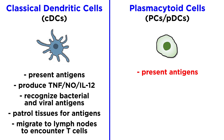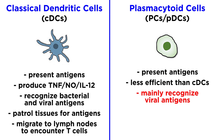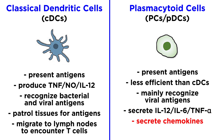PDCs can also act as antigen-presenting cells, but they are much less efficient than CDCs. PDCs predominantly recognize viral antigens, specializing in the production and secretion of type 1 interferons, IL-12, IL-6, TNF-alpha, and pro-inflammatory chemokines. PDCs enter the lymph nodes directly via the bloodstream.